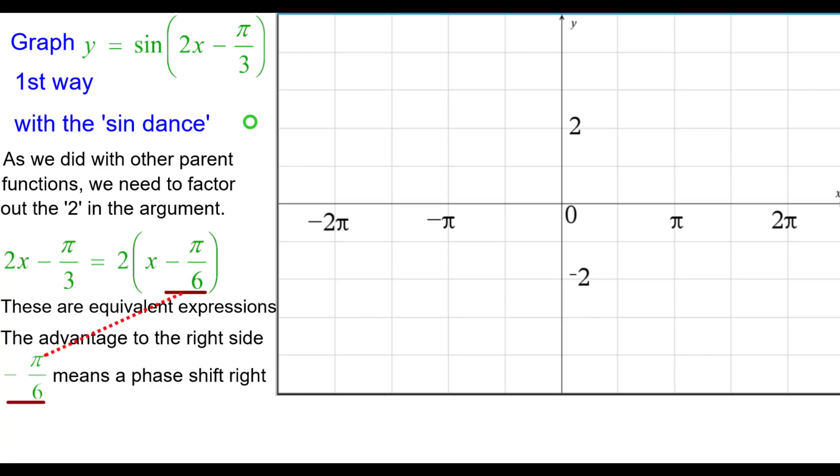The advantage to the right side is that the minus pi over 6 means that's a phase shift right, and the times 2 means the period is divided by 2.